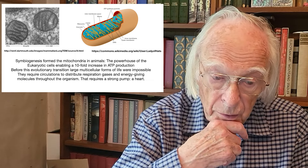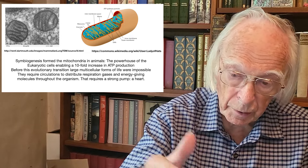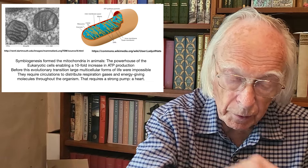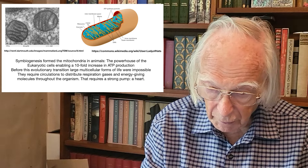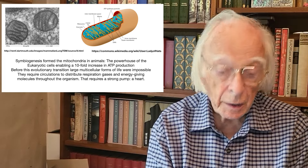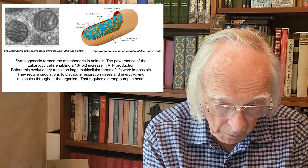On the left you can see an actual electron microscope photograph of two mitochondria sectioned transversally, showing the extent to which the inner membrane crosses and recrosses the structure of the mitochondrion. That means eukaryotic cells were enabled to have a tenfold increase in ATP production. That is why, before this evolutionary transition, large multicellular forms of life were impossible — they require circulations to distribute respiratory gases and energy-giving molecules throughout the organism, and that requires a strong muscular pump: the heart.